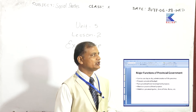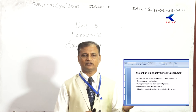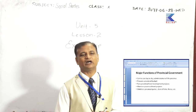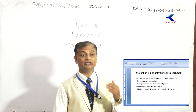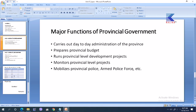The provincial government carries out day-to-day administration. As with the federal executive, it is the main executive body for the province — it looks after law and order, peace and security, and provides facilities and services in the particular province. It also prepares the provincial budget; the provinces have the authority to run their own development plans, programs, and projects. It monitors and supervises provincial level projects and mobilizes the provincial police, armed police force, etc.